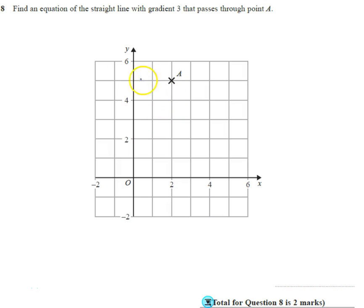Okay, question number 8. Find an equation of the straight line with gradient 3 that passes through point A.